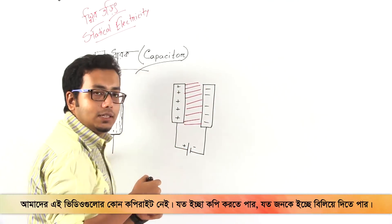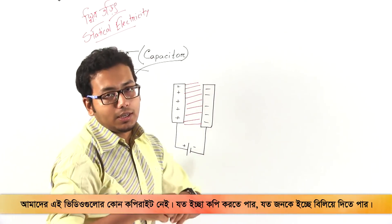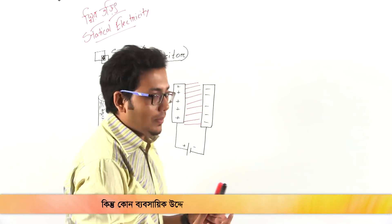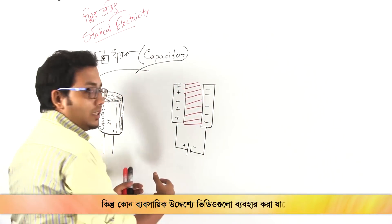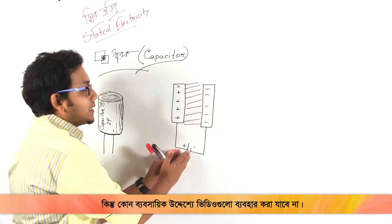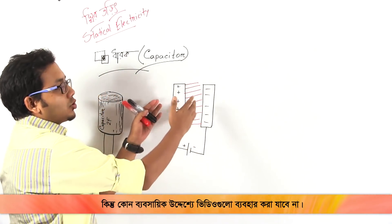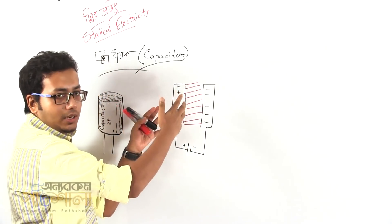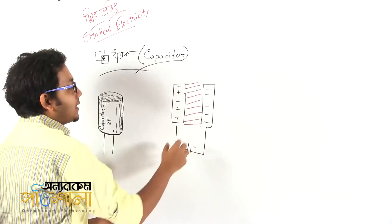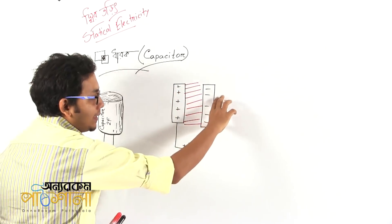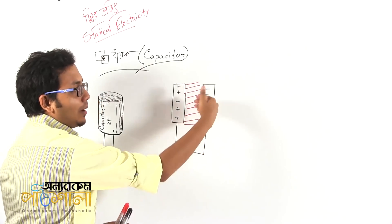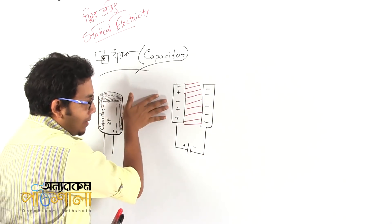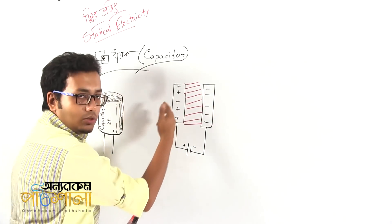The battery is a continuous charge supply, so this is a continuous charge supply. It is very important to have the same charge supply. The battery is a constant.